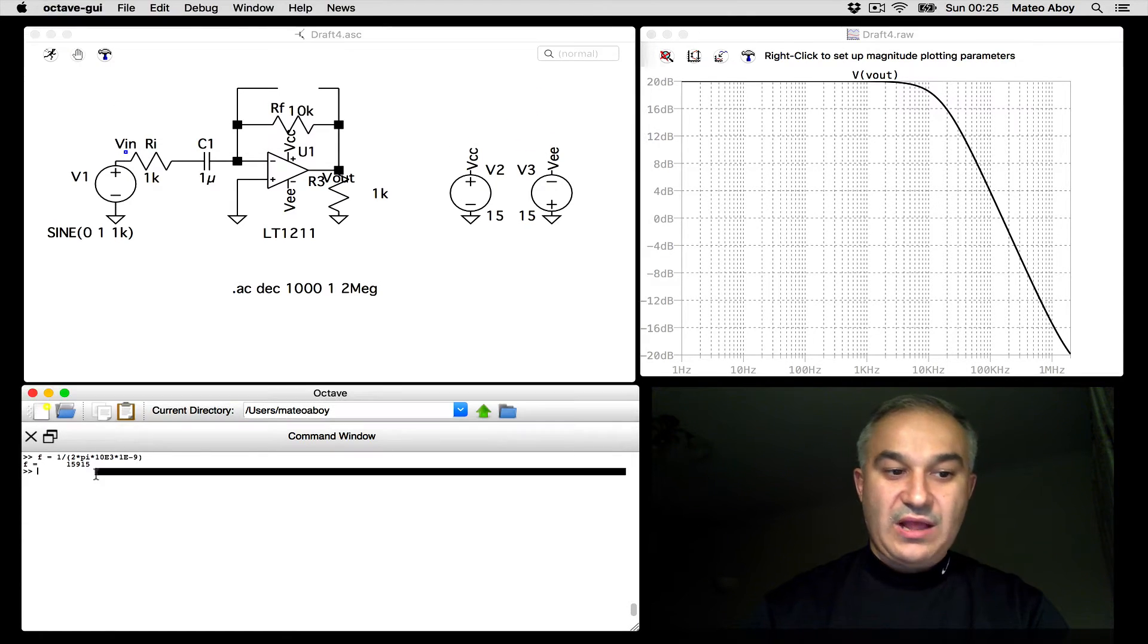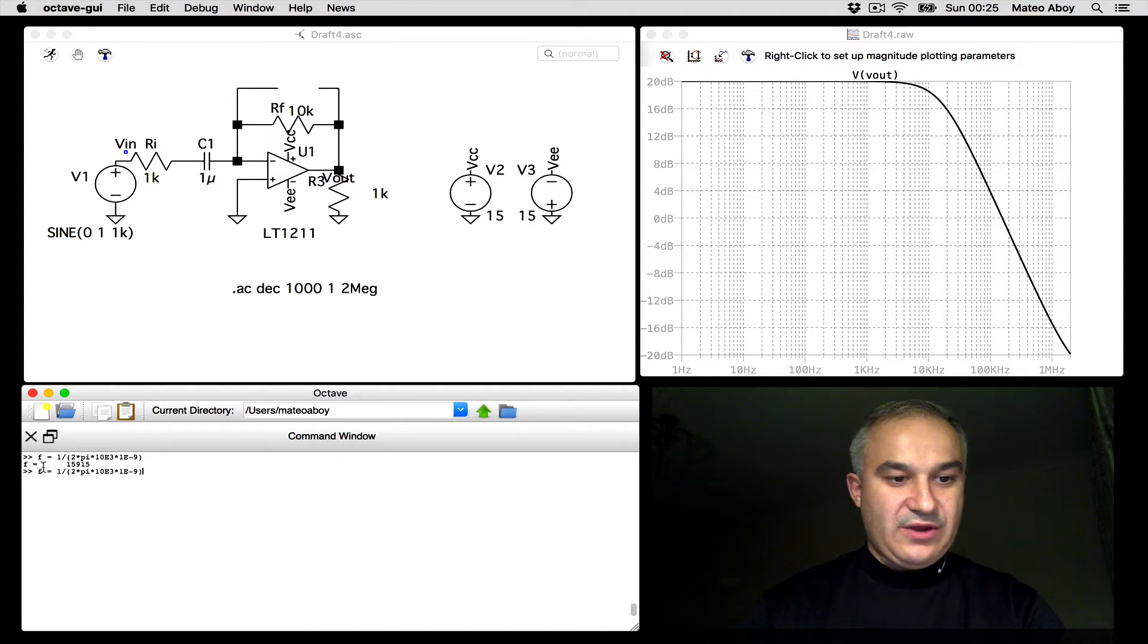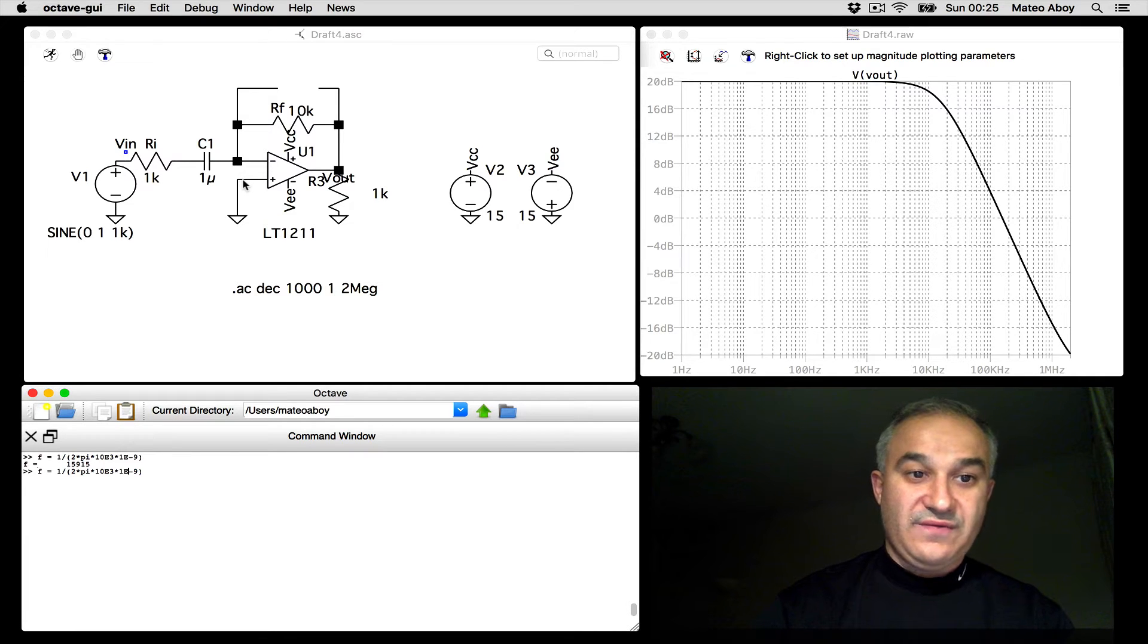Now, if we want to calculate what would be the corner frequency, in this case, the capacitor is interacting with Ri. This is what is creating the high-pass filter. Notice that at DC, this is an open. And so at DC, the output is just going to... The voltage at the inverting input is going to be equal to the voltage at the non-inverting input. And that's zero.